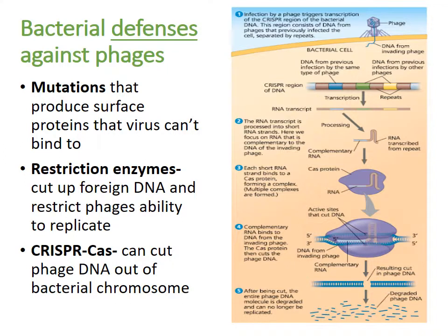Bacteria don't want to be infected by phages, just like we don't want to be infected by viruses. Things that protect bacteria against phages include mutations that don't allow phages to bind to the surface of the cell, restriction enzymes that cut up any foreign DNA to restrict the ability of the phage to replicate, and the CRISPR-Cas9 system, which can actually cut out phage DNA from the bacterial chromosome.